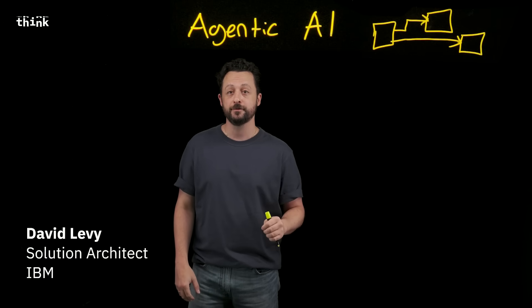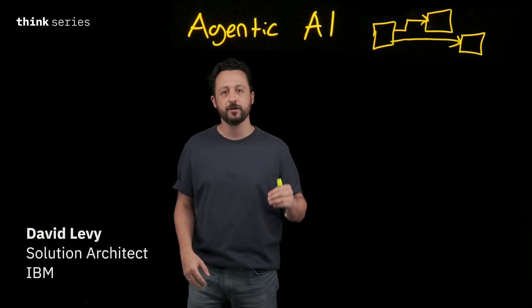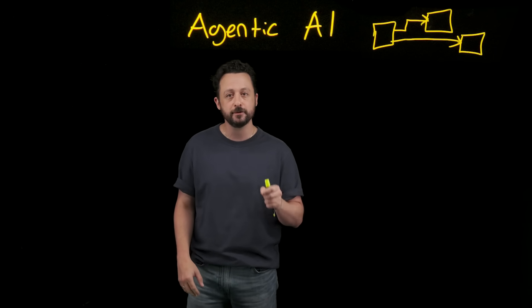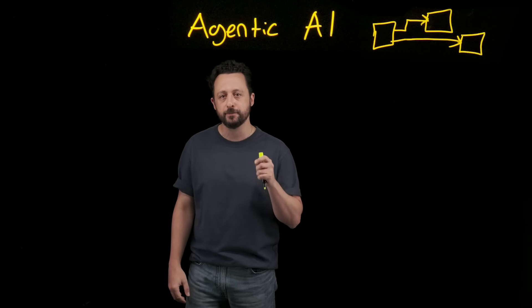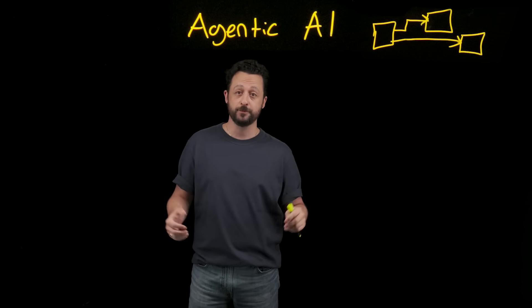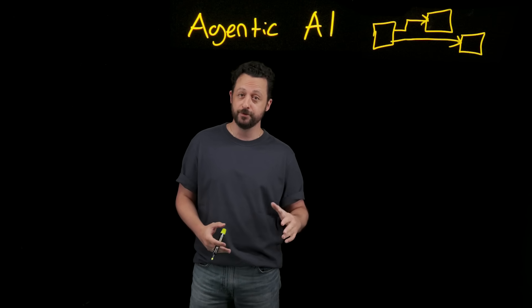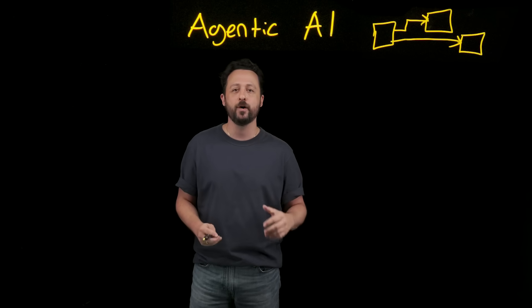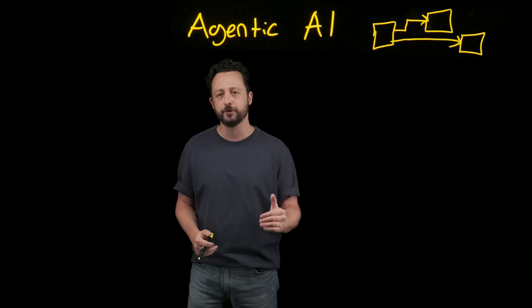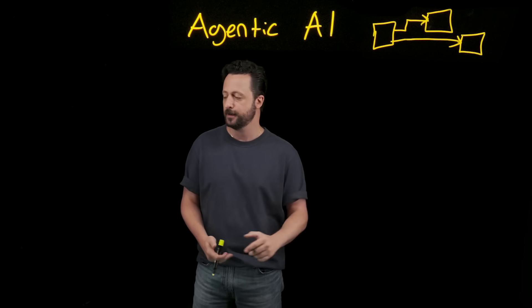Let's talk about building private agentic flows. These aren't just chatbots. These are agents that can reason, take action, and still keep your data completely private. Let's explore what private actually means and why it's incredibly important for building with AI.